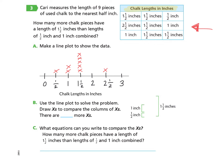Now let's look at Part B. Use the line plot to solve the problem — draw X's to compare the columns. Half an inch has one X, and one inch has two X's. Looking at one and a half inches, there are five X's. Comparing the combined half inch and one inch to one and a half inches, there are two more X's for one and a half inches.